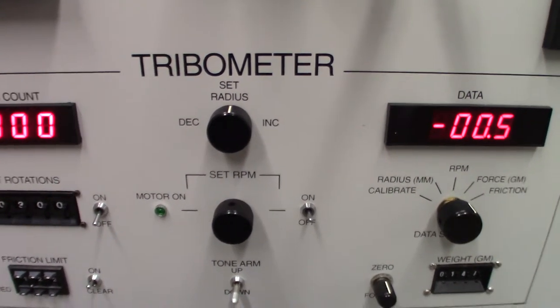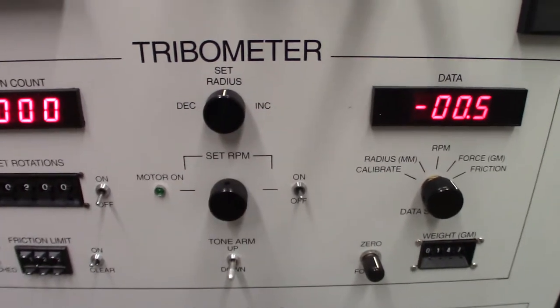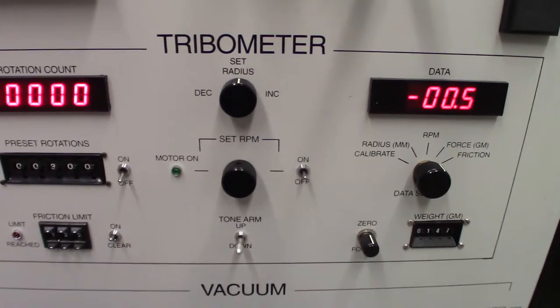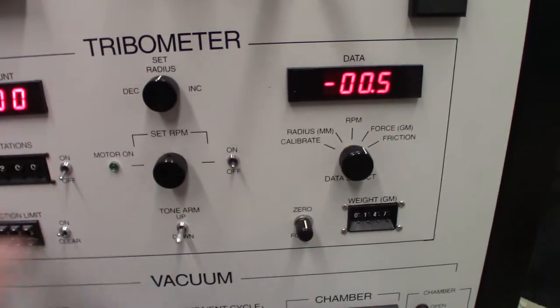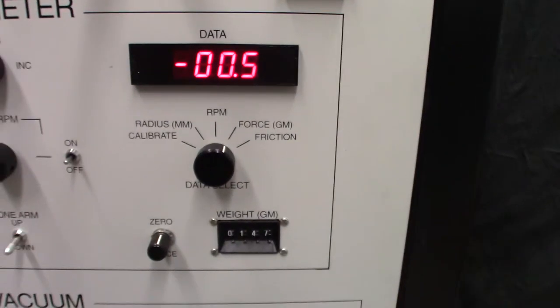And this selector knob here has three positions. In the middle, set radius will just spin the stage normally. If you turn it to decrease, it will actually move the whole stage to the left to change the radius for a larger specimen. And then increase moves it to the right.